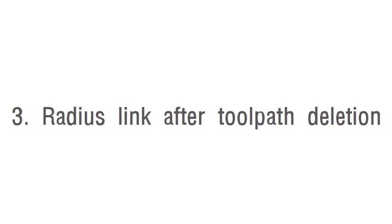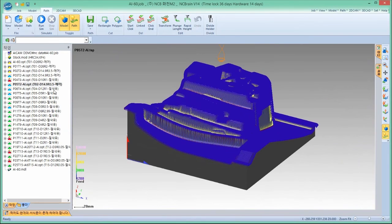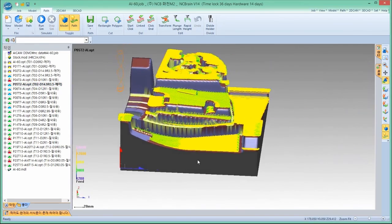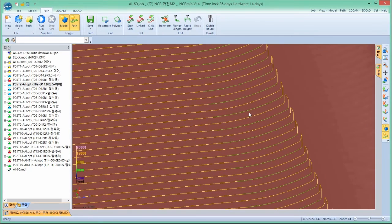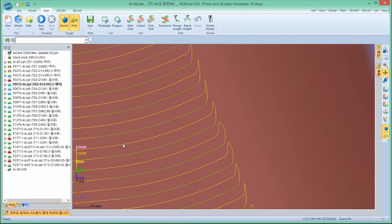Third, radius link after toolpath deletion. Original data is the whole toolpath of the semi-finishing. It leaves only necessary area for semi-finishing over 0.1 mm thickness. After deletion of toolpath, more smooth machining will be done by applying radius link.